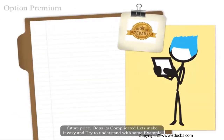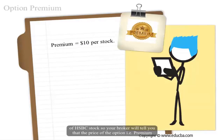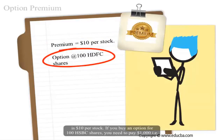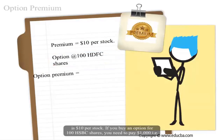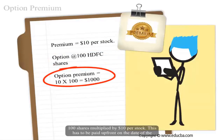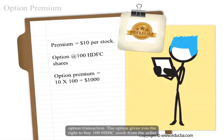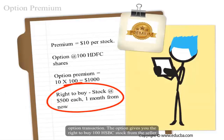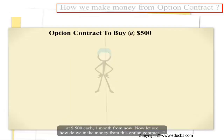Let's make it easy with an HSBC stock example. Your broker tells you the price of the option — the premium — is $10 per stock. If you buy an option for 100 HSBC shares, you need to pay $1,000 (100 shares × $10 per stock). This has to be paid upfront on the date of the option transaction. The option gives you the right to buy 100 HSBC stocks from the seller at $500 each, one month from now.